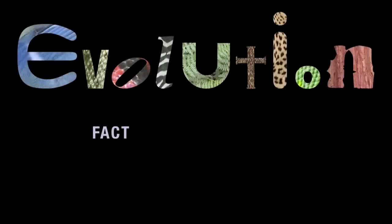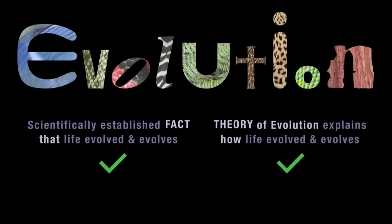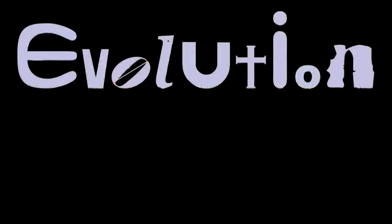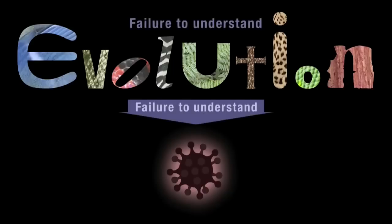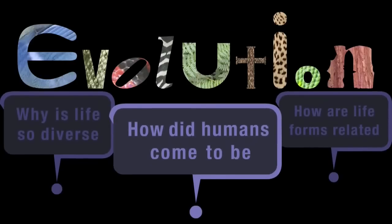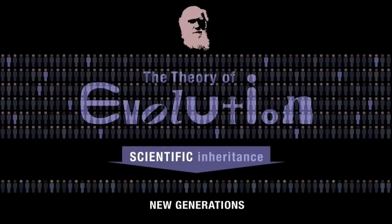Evolution is both a fact and a theory. It's a scientifically established fact that life evolved and continues to evolve, and the theory of evolution explains how it does so. There are many reasons it's important to understand evolution, not least because evolution is essential to our understanding of biology. With viruses quickly evolving resistance to our existing defences, our failure to understand those processes will mean a failure to understand some of the most deadly threats we face. Because of the curiosity and careful dedicated work of generations of scientists, we now understand in greater detail than at any other time in history answers to some of our biggest questions about life on this planet — a scientific inheritance we are wise to pass on to new generations.